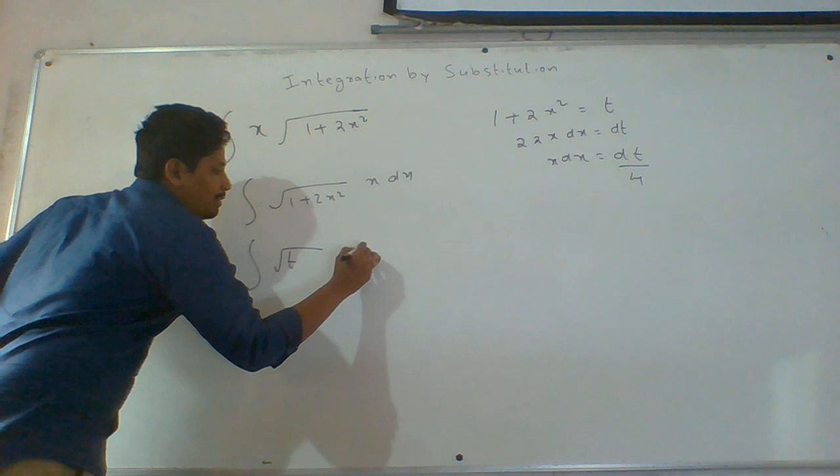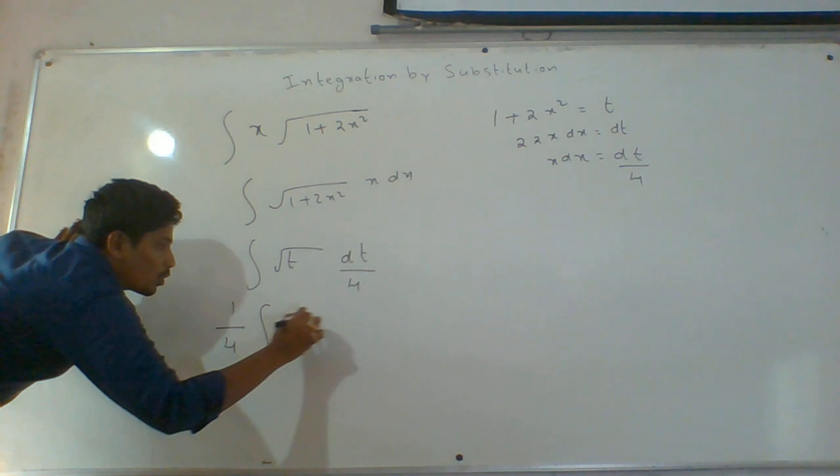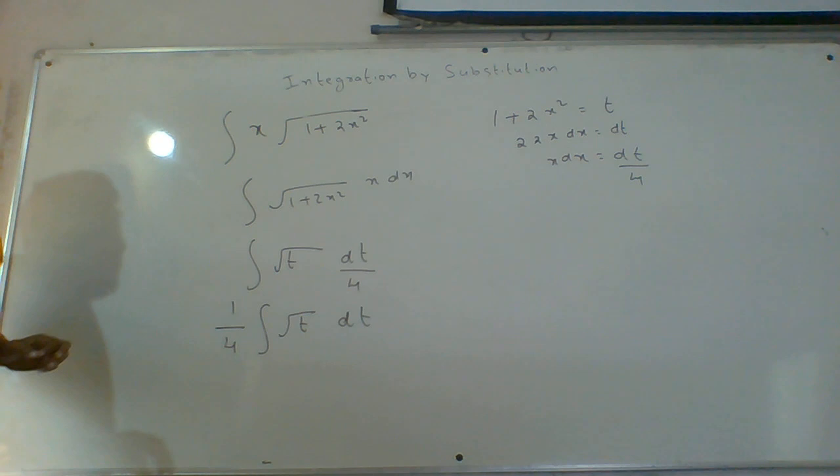This 4 is constant, it will come out. So we have 1 by 4 integral root t dt.